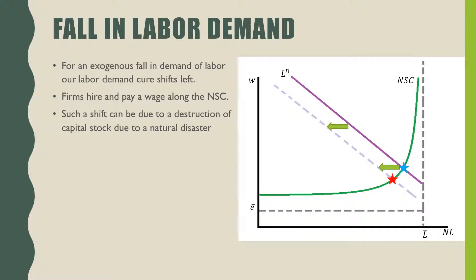For an exogenous fall in labor demand, this shifts our firm's labor demand curve to the left and changes the equilibrium from the blue star to the red star. Firms go and hire and pay the wage along the no shirking condition, and such a shock could be due to destruction of capital stock from a natural disaster.